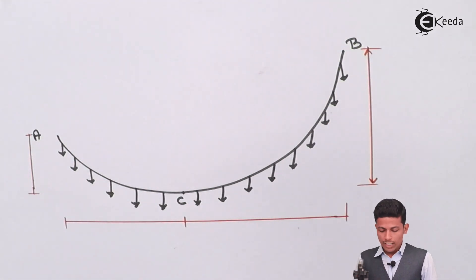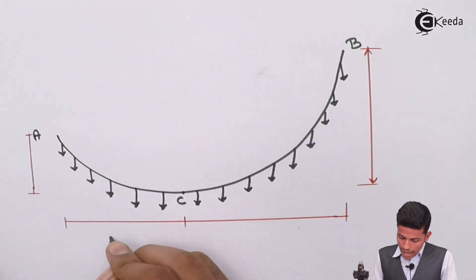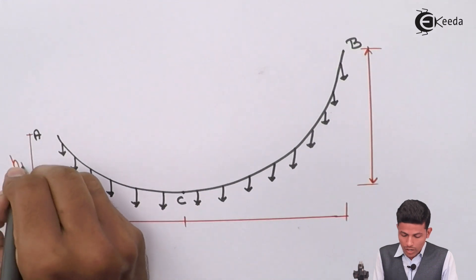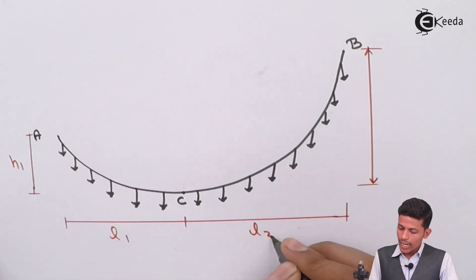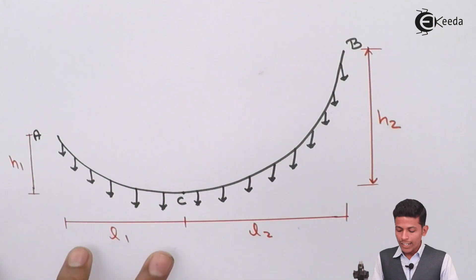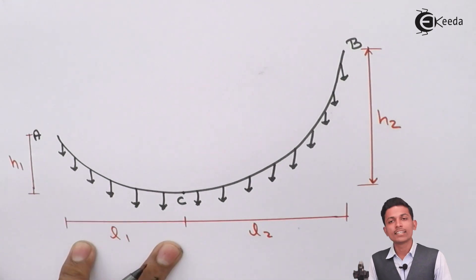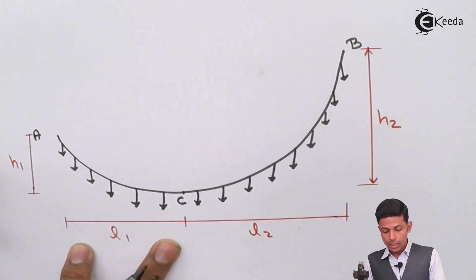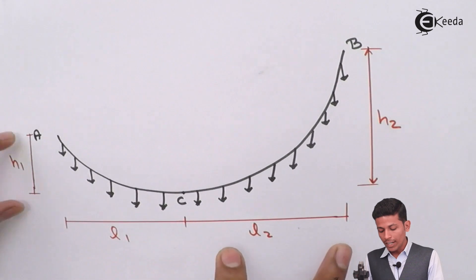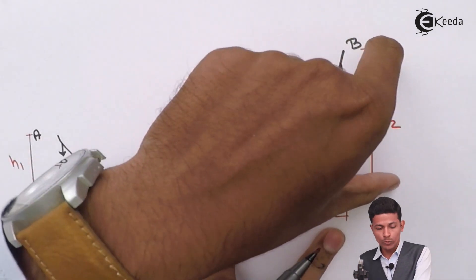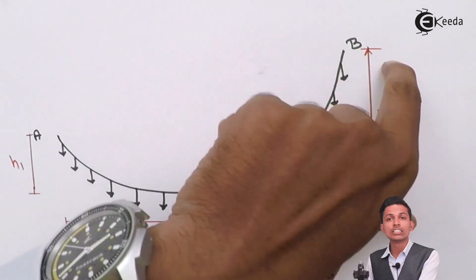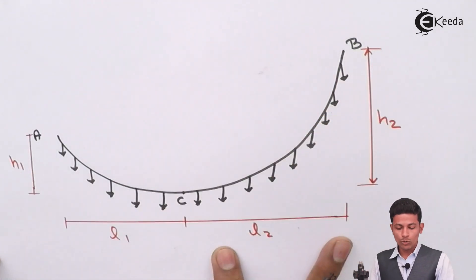If this distance is L1, this distance is H1. If this distance is L2, this part will be H2. Please remember: if you are taking this part as L1, this will be H1; if this part is L2, this is H2.